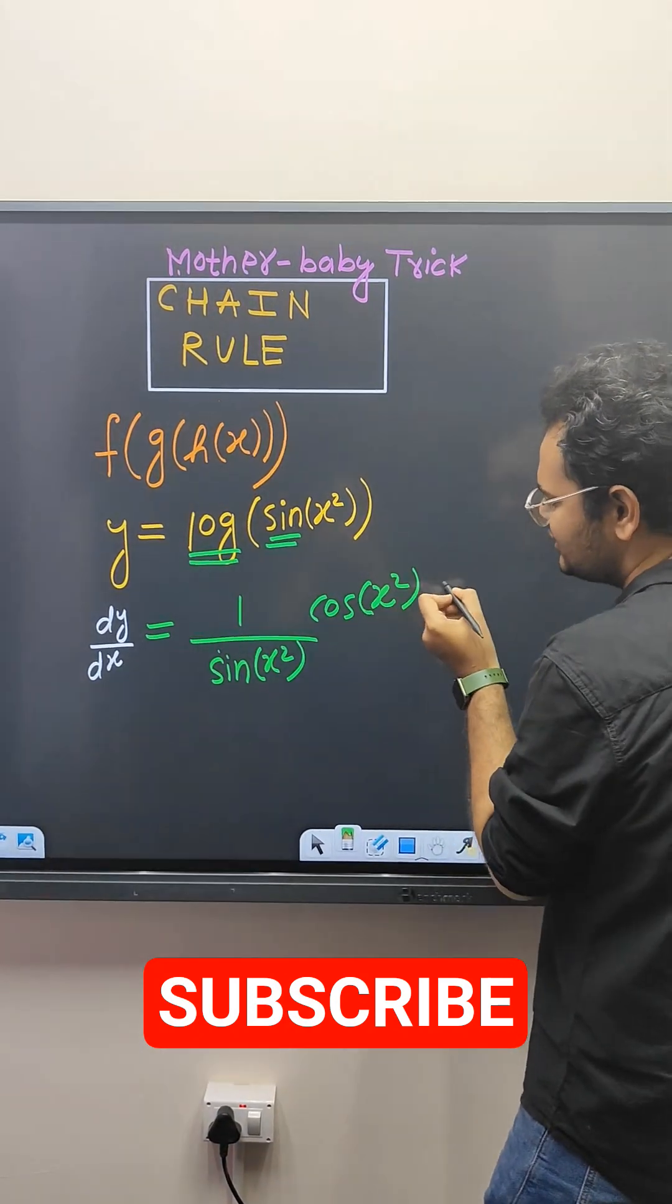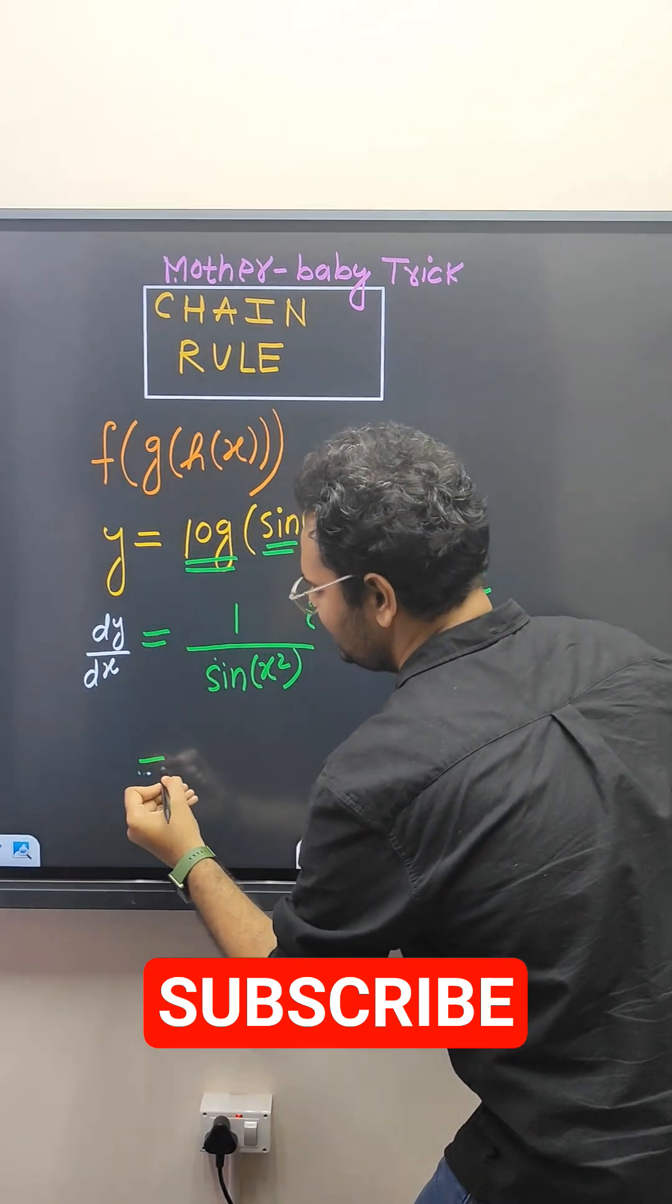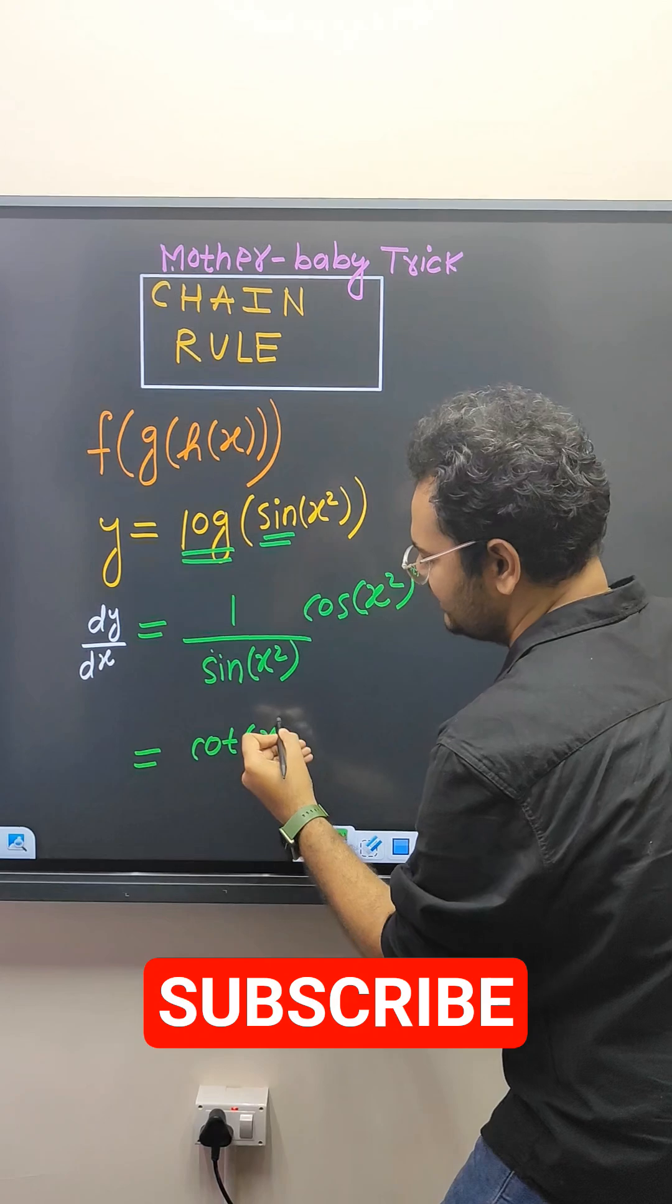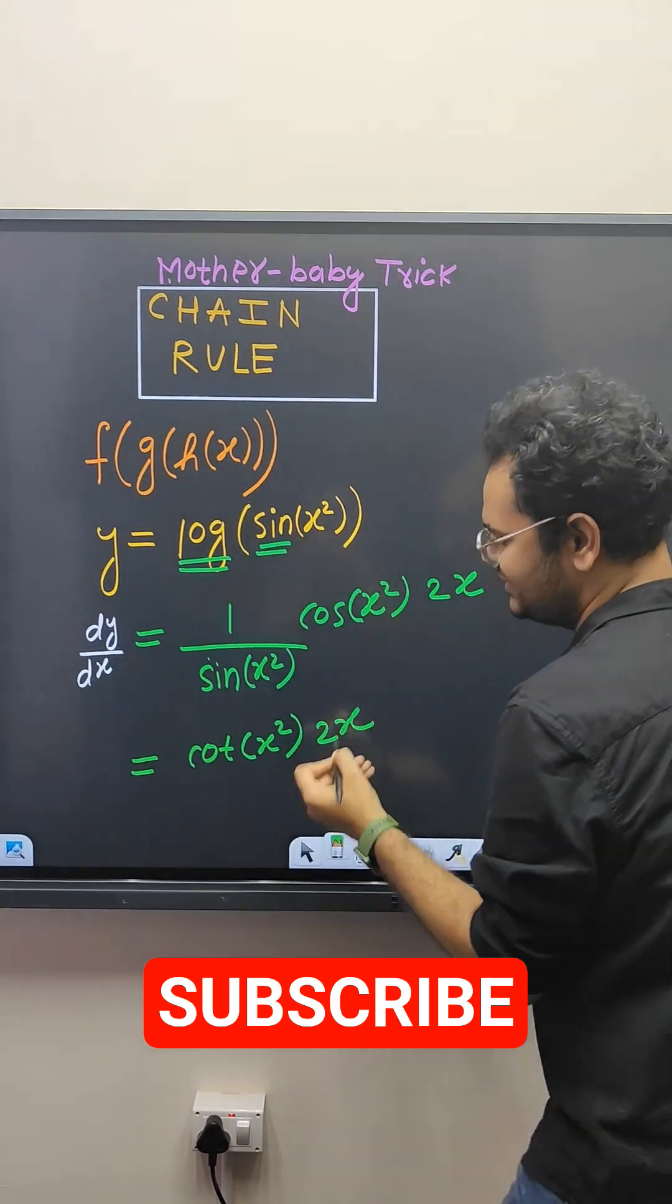When only baby remains, that is x square, its differentiation is 2x. So my final answer is cos upon sine, that is cot of x square into 2x. Sorry.